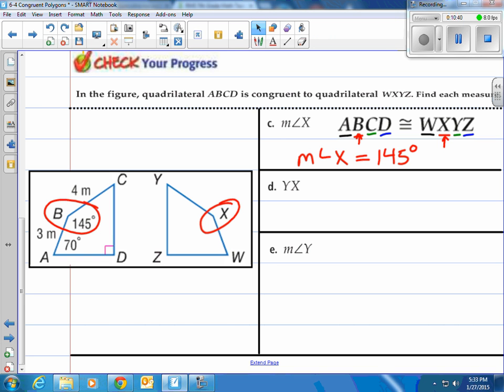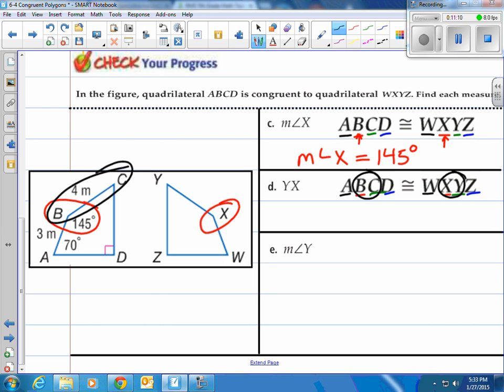Let's take a look at D here. Same thing, we've got our congruent statement, we've got our matching pieces. Now what are we looking for? YX. YX is this piece right here. YX is the same as BC. Well, look how easy this is. BC is 4 meters. So since it's the same thing, we would say YX is equal to 4 meters.